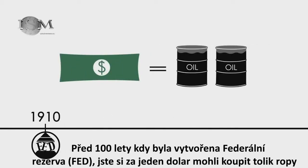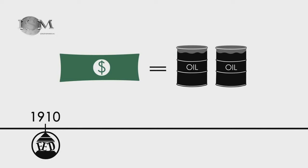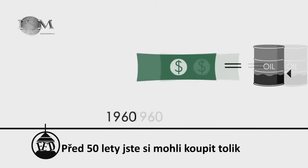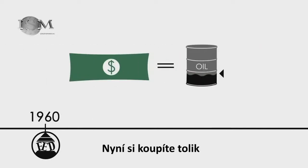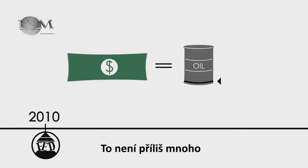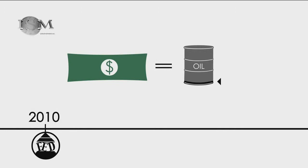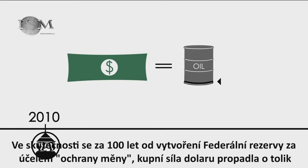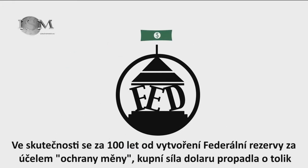A hundred years ago, when the Federal Reserve Bank was formed, a dollar would buy you this much oil. Fifty years ago, it bought you this much. Now, it buys you this much. That's not very much, is it? In fact, in the hundred years since the Federal Reserve Bank was formed to protect the currency, the purchasing power of the dollar has fallen by this much.